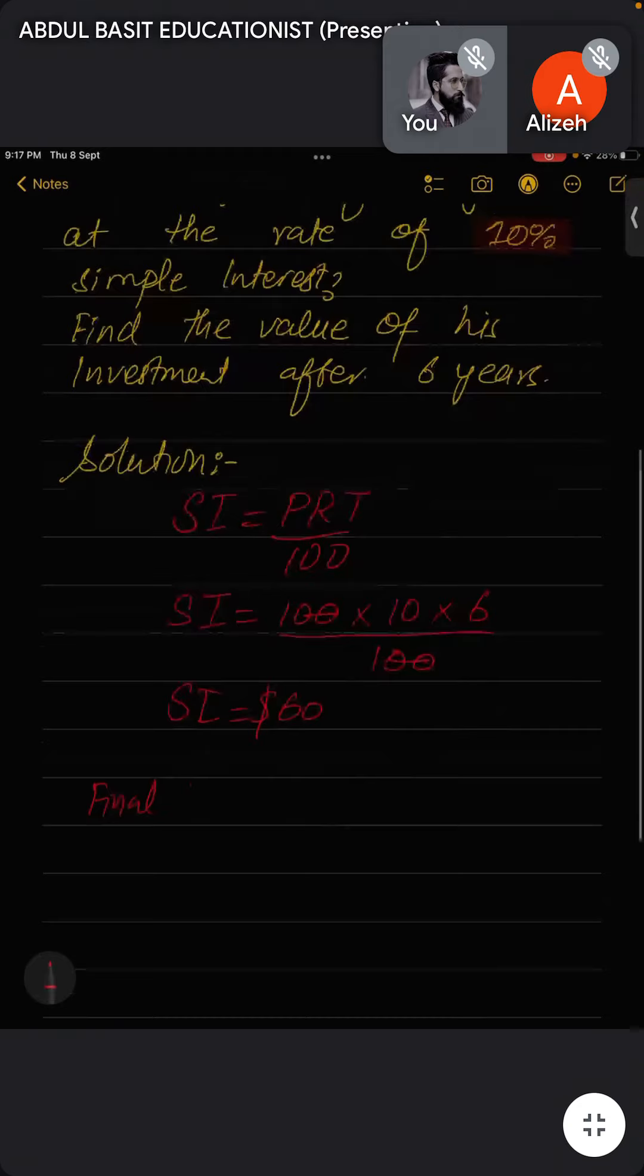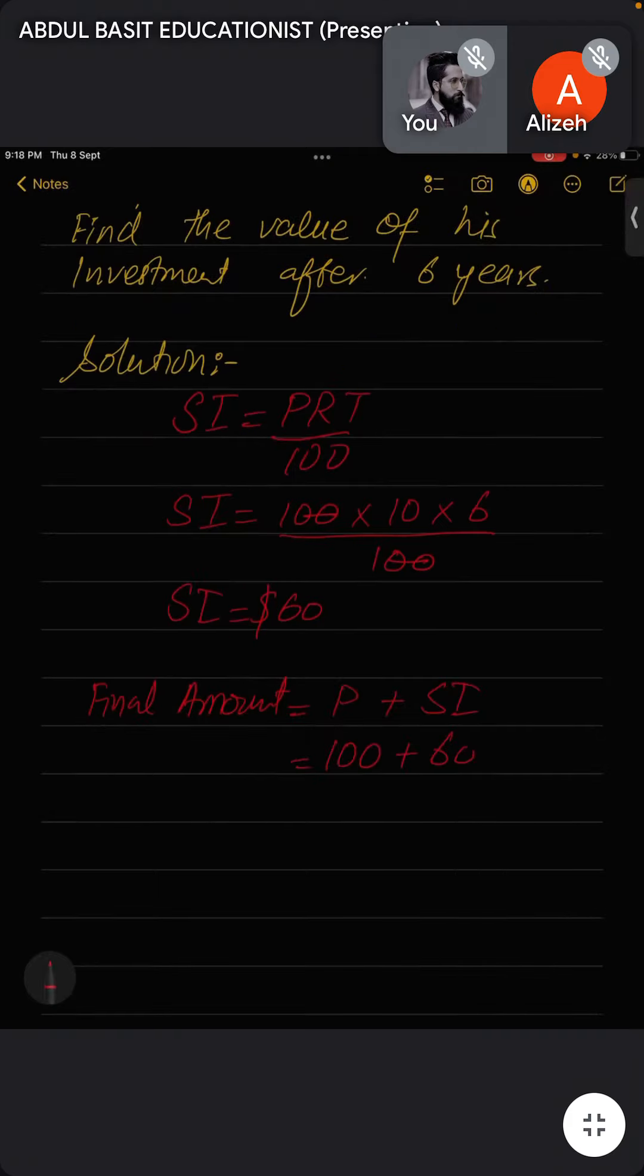As interest, so the final amount would be principal plus simple interest. The final amount would be principal plus interest, which is 100 + 60, so the final answer is $160.